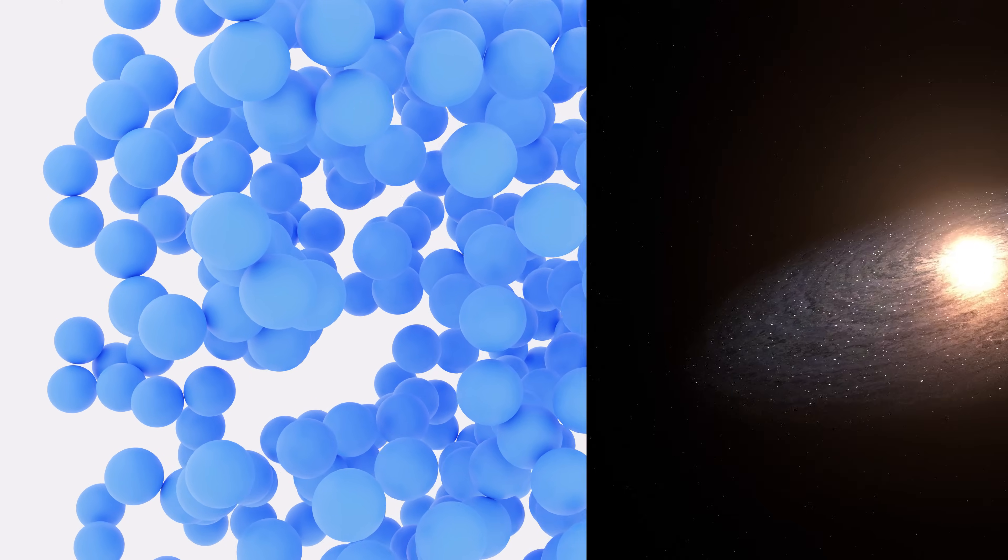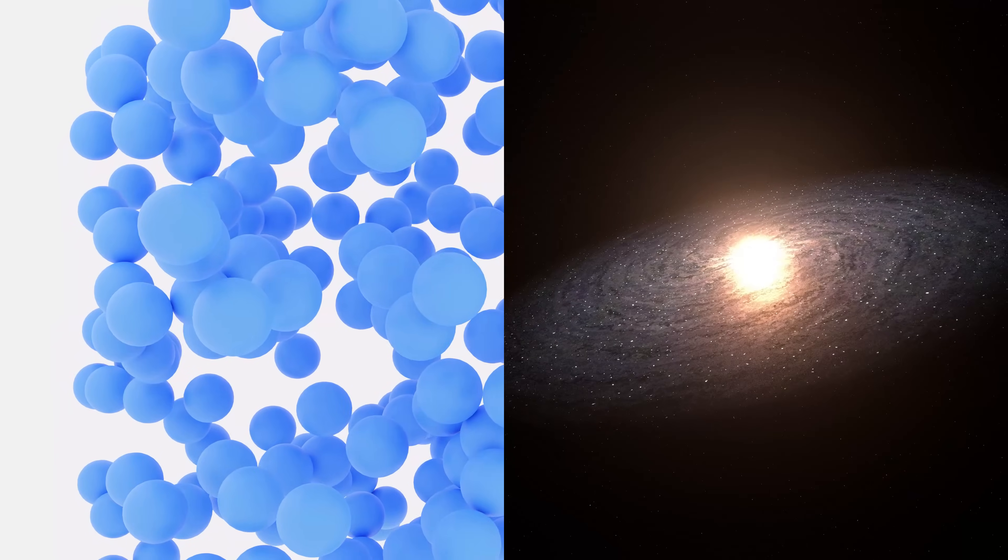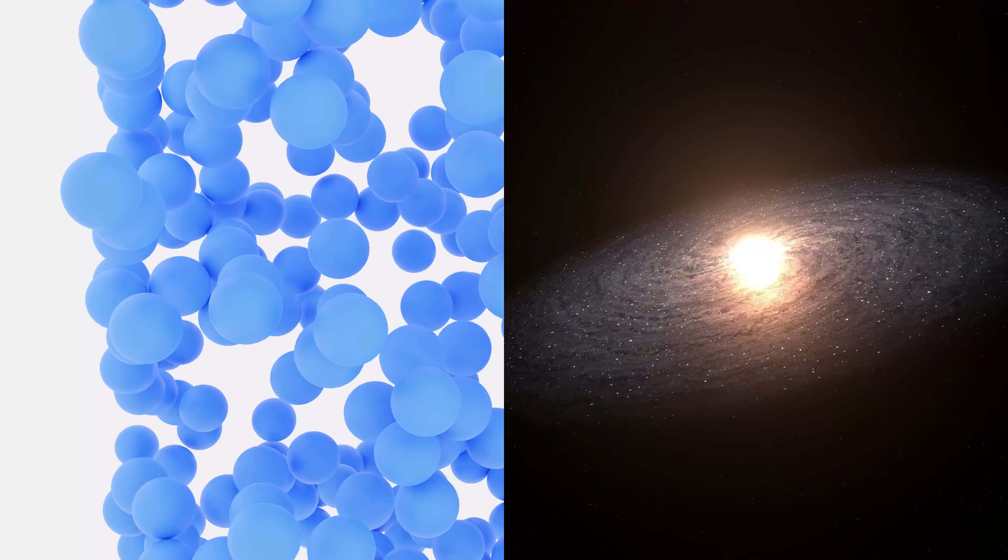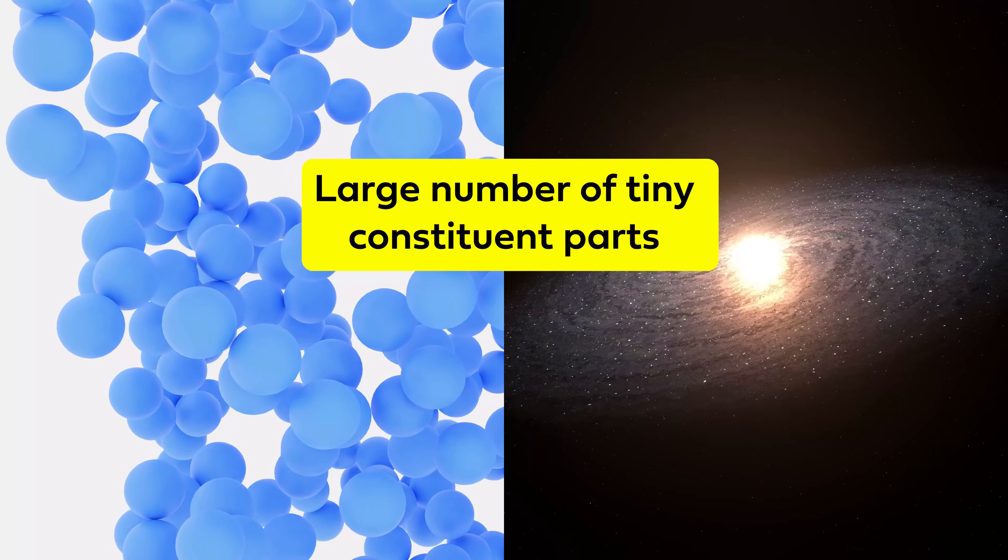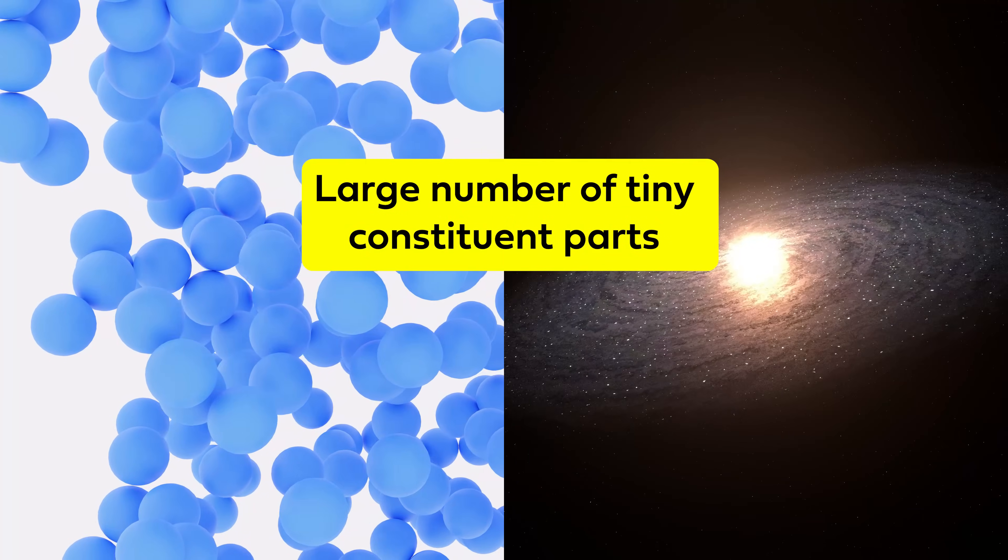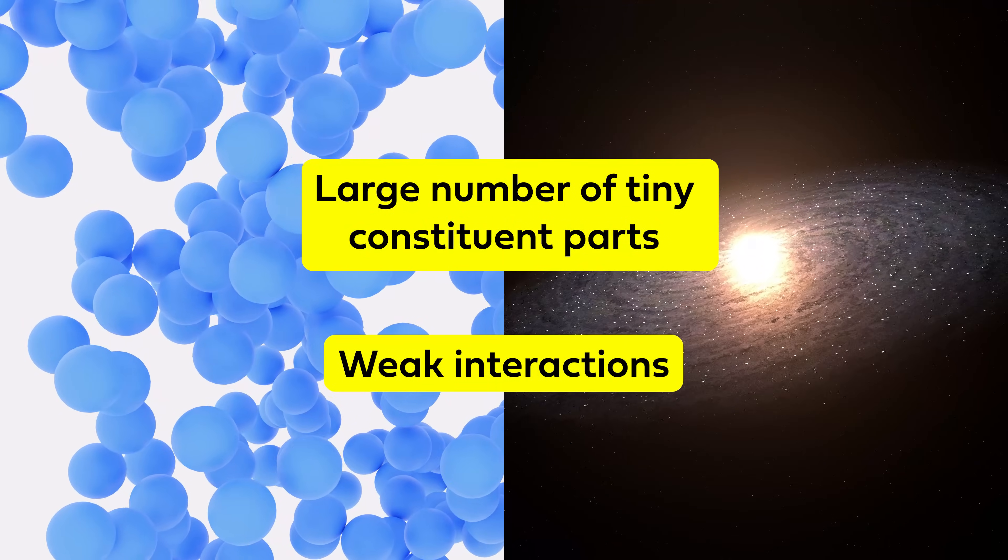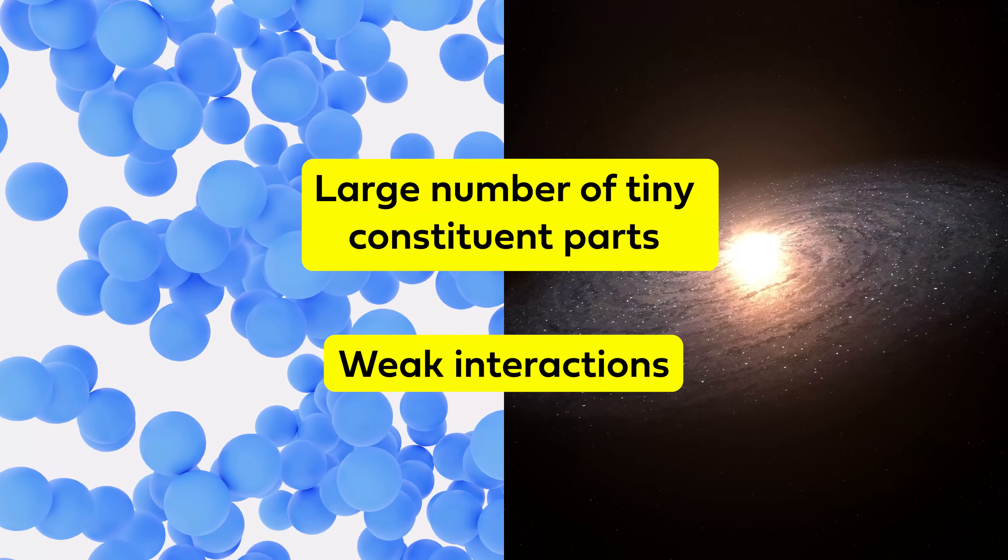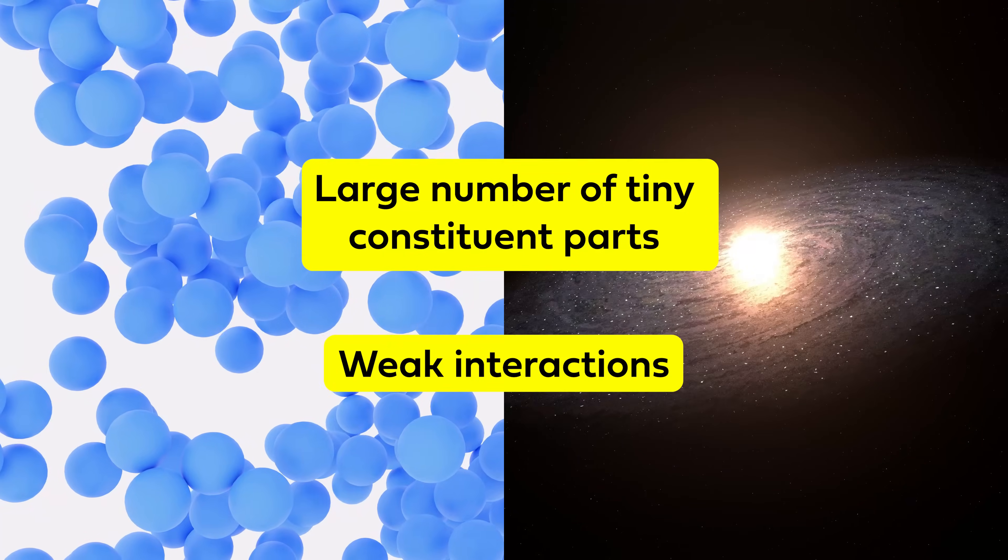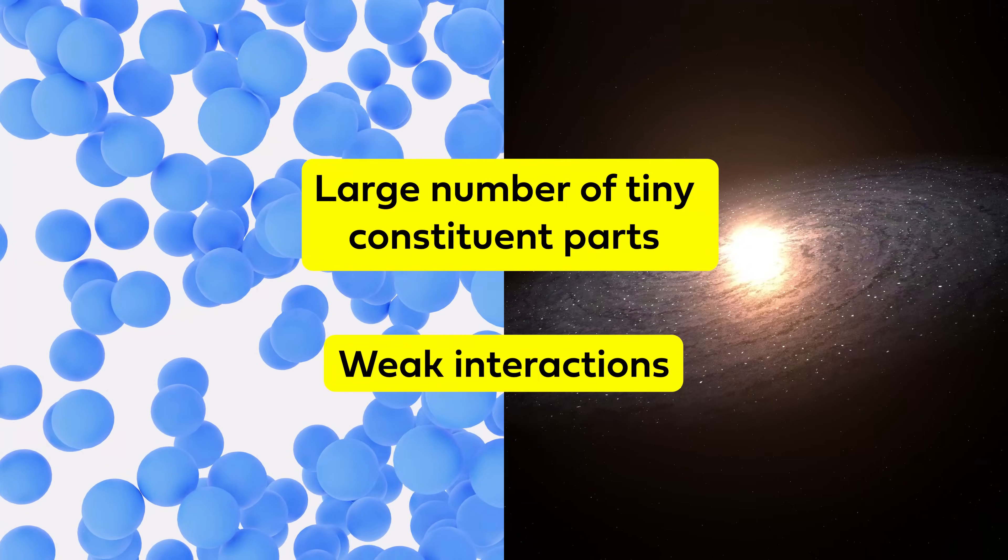Instead of considering molecules making up a droplet of water, we can consider stars making up a galaxy. Because both are formed of large numbers of individual components that are tiny compared to the whole, and that weakly interact with one another, electromagnetically in one case, and gravitationally in the other. Mathematically, they're very similar.